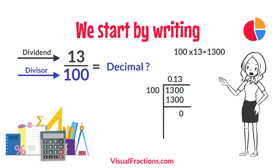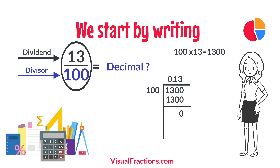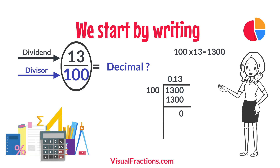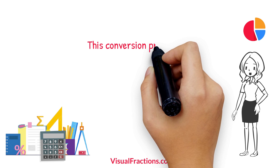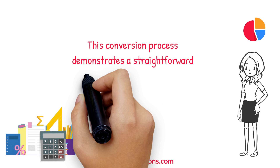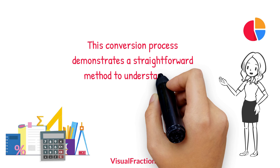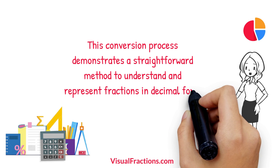So, there we have it. The fraction 13 one-hundredths converted to a decimal is 0.13. This conversion process demonstrates a straightforward method to understand and represent fractions in decimal form.